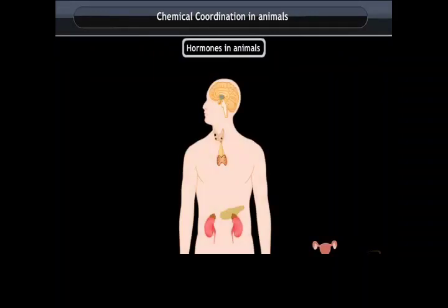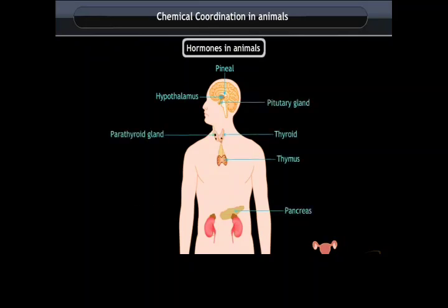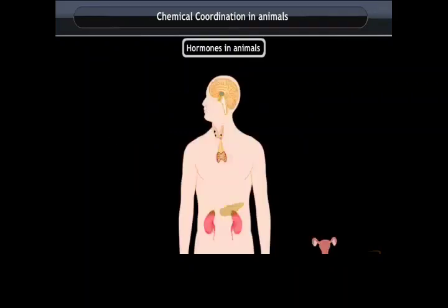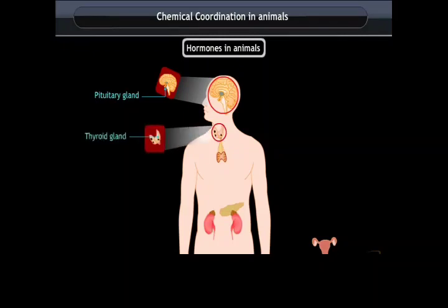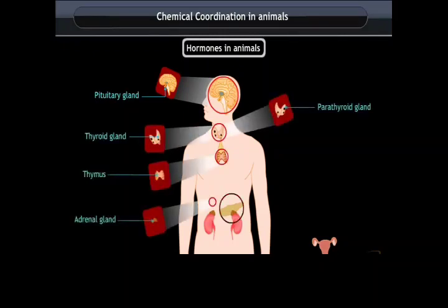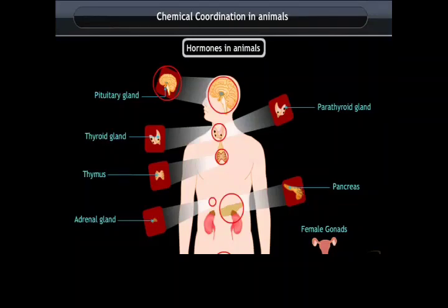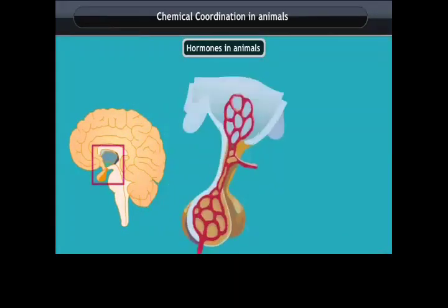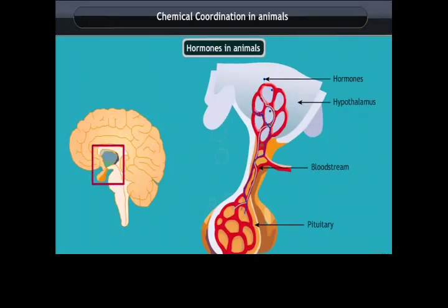Chemical Coordination in Animals — Hormones. Chemical coordination in animals occurs due to the secretion of hormones from endocrine glands. Major endocrine glands include the pituitary gland, thyroid gland, parathyroid gland, adrenal gland, pancreas, and gonads (ovary and testis). The pituitary gland is commonly called the master gland because it secretes hormones that control several other endocrine glands. Each of these glands produces hormones with a specific effect on the body.